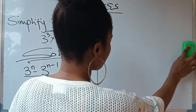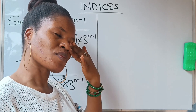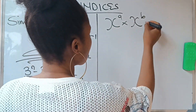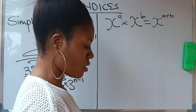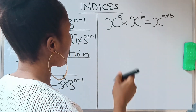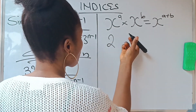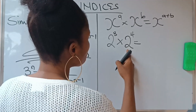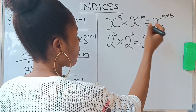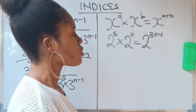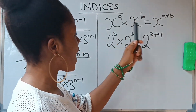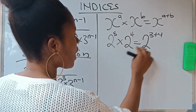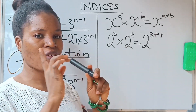Now the first law of indices we are going to apply is the multiplication law. The multiplication law states that x raised to the power of a times x raised to the power of b is the same as x raised to the power of a plus b. For example, 2 raised to the power of 3 multiplied by 2 raised to the power of 4 equals 2 raised to the power of 3 plus 4. Once you have two numbers in the same base that are multiplying, you pick one of them and add their powers.